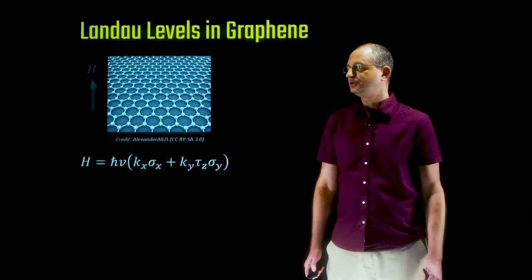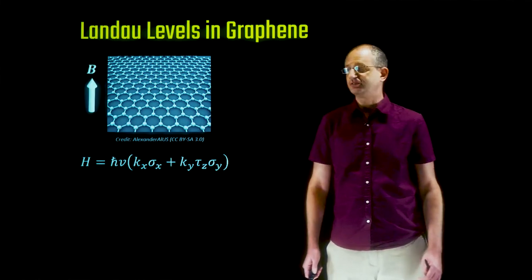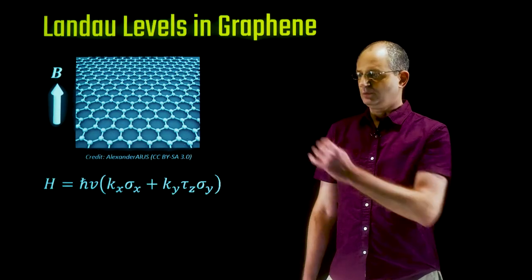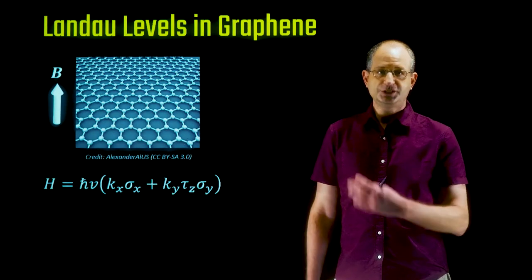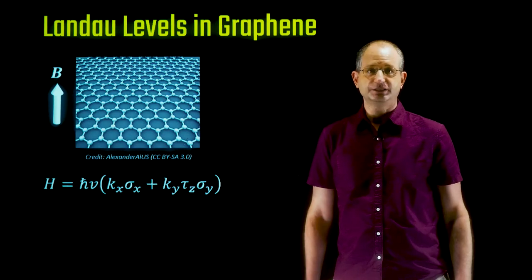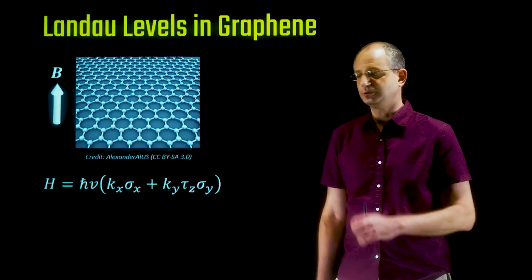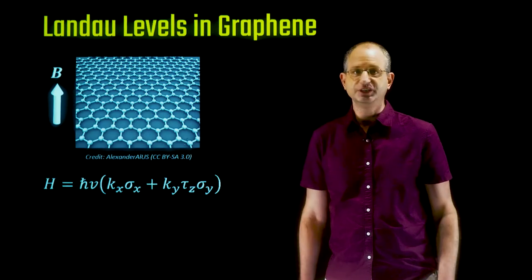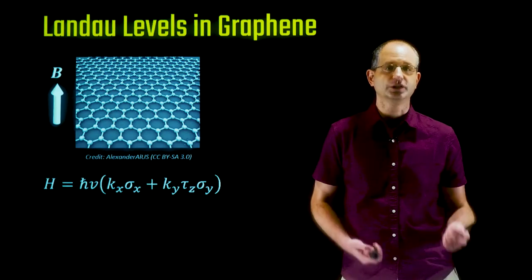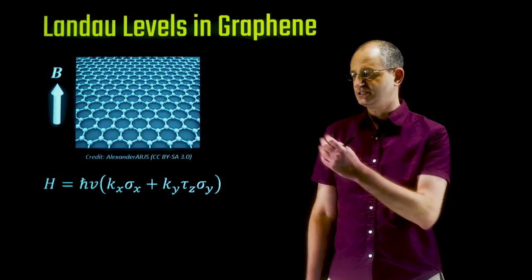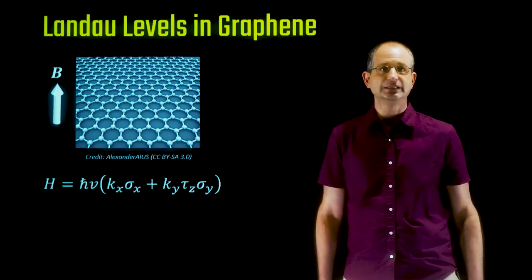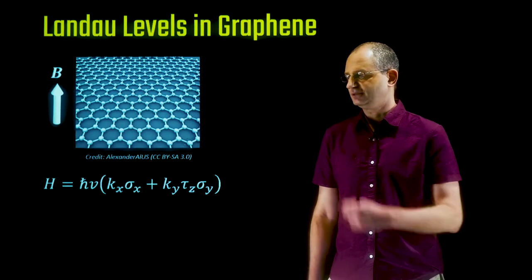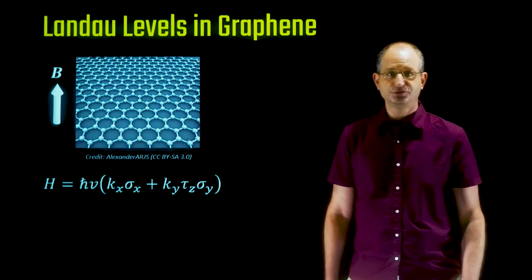What we're going to do now is ask about the spectrum of the system when we add a perpendicular magnetic field. This is interesting for two reasons: first, the spectrum of Dirac electrons in a magnetic field has interesting features relevant not only to graphene but also to other materials we'll see later in the course. Second, this special Landau level spectrum of Dirac fermions is what allowed people to identify graphene in experiments for the first time.